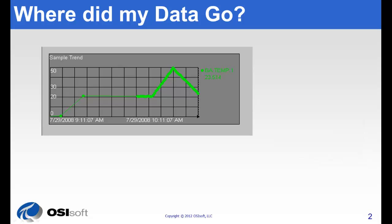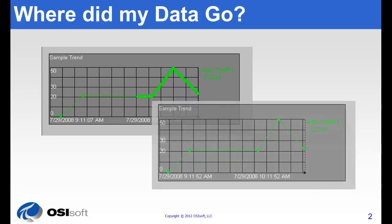Have you ever refreshed a trend only to see some data points disappear? What you're seeing is the effect of exception and compression. But you don't need to fear because the fidelity of the trend is still preserved with the points that have been kept and stored in the PI archives.